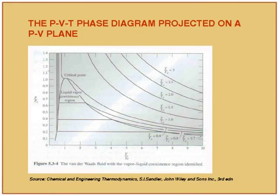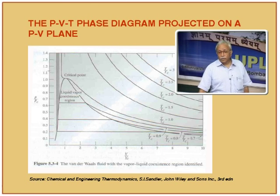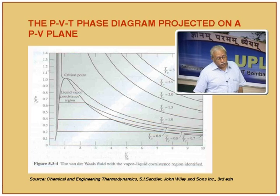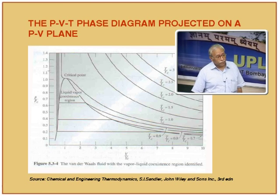Beyond this critical point we have the gaseous phase, where temperature is greater than Tc. What we do is assume temperature T as a parameter and project this 3D plot onto a 2D diagram. This diagram is slightly different in that rather than showing absolute temperatures, pressures, and volumes, it is shown as a generalized diagram — for a given component, the normalization has been done using the respective critical properties: critical pressure, critical volume, and critical temperature.